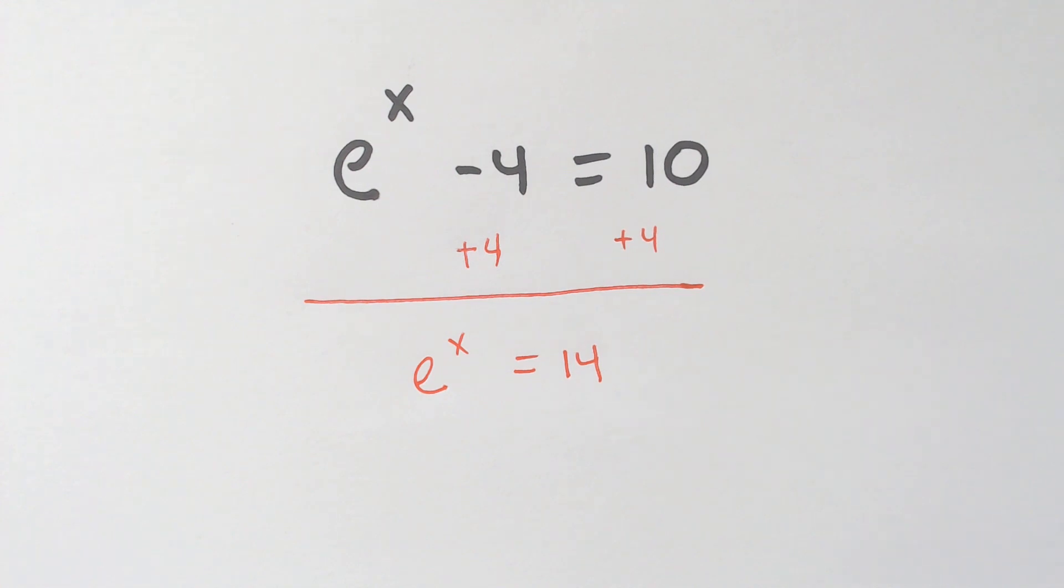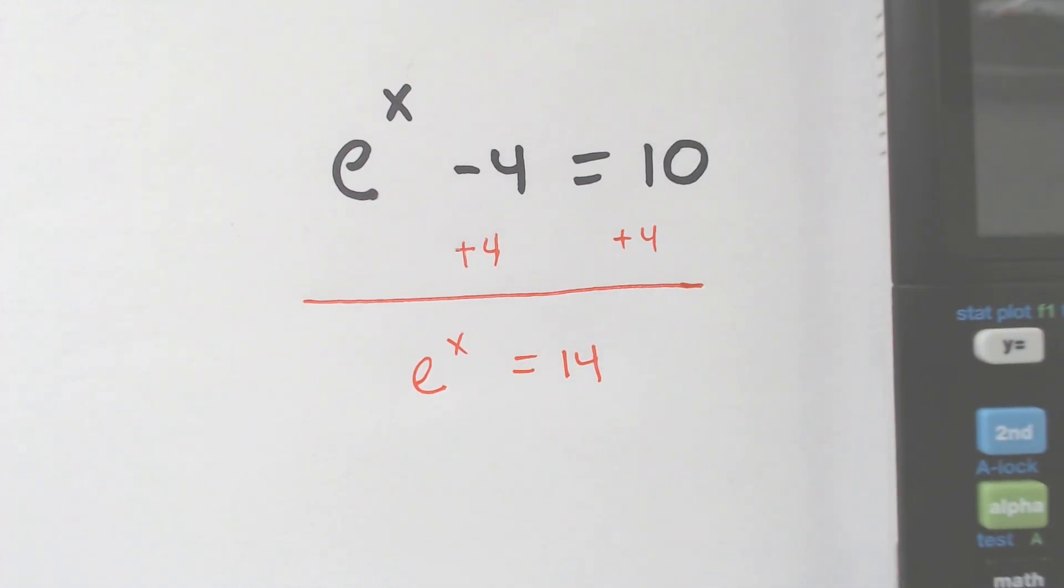And then from here, the most important thing to recognize is in order to get rid of an E, you need to LN both sides. But in order to get rid of an LN, you would E both sides.